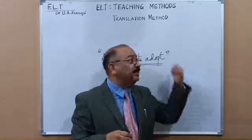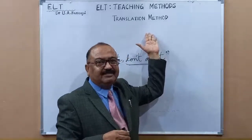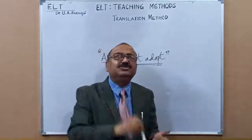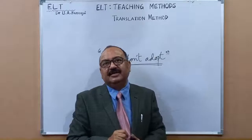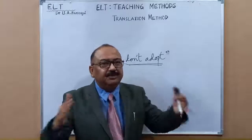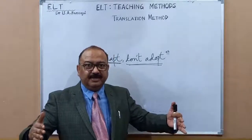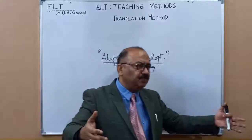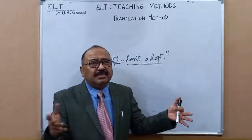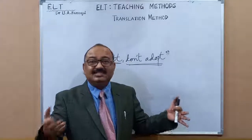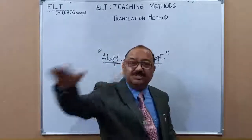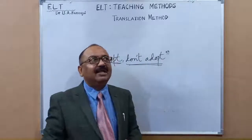If the class is big, teach through the translation method if students aren't good at English. The direct method requires one-to-one attention, which is only feasible with a small number of students — say 25 to 40 at most. Beyond that range, it is difficult to handle the direct method. The location of the school also matters — whether it is in a rural or urban area.